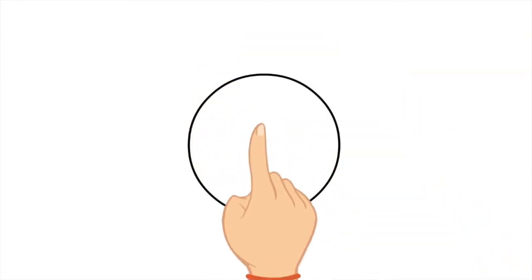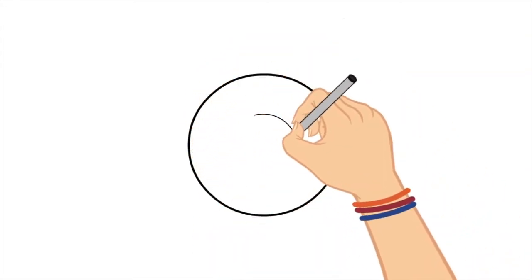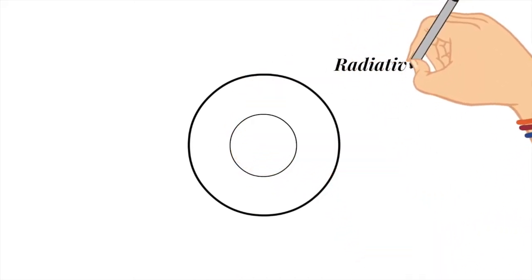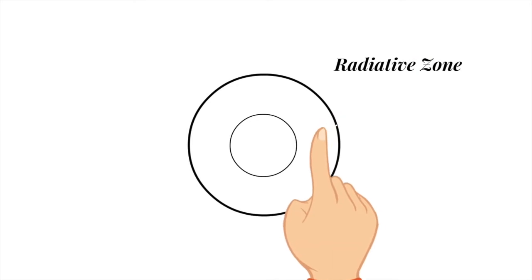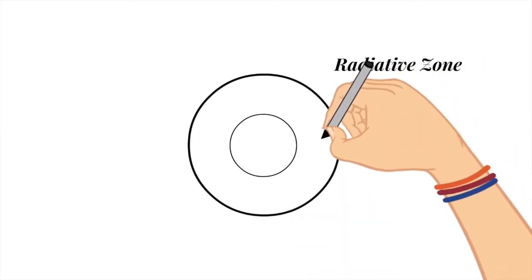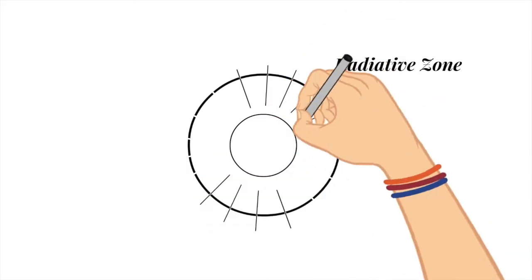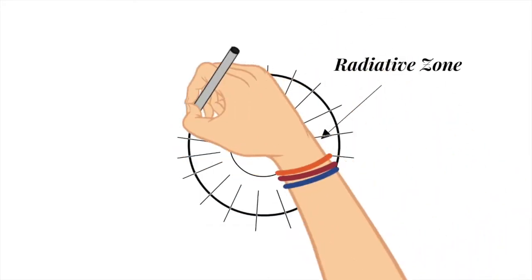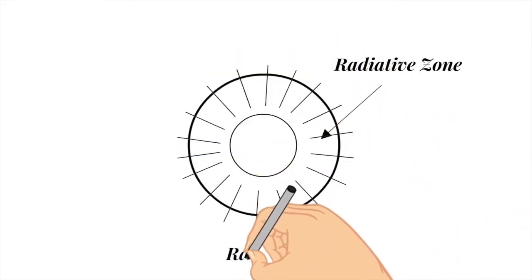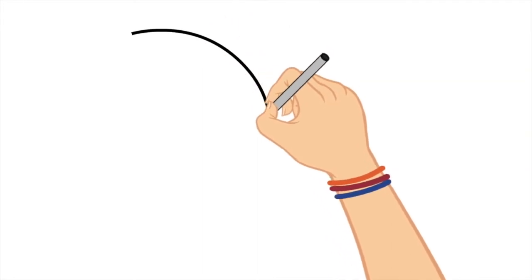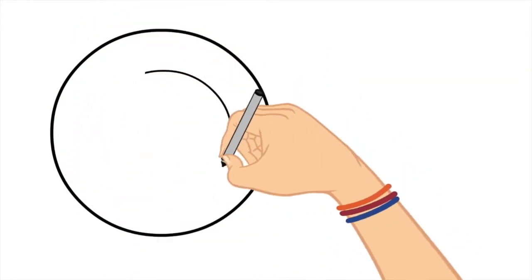Moving outward, the next part of the sun is called the radiative zone. This is easy to remember because the energy that the core produces radiates, hence the name, through this area. In other words, the energy is conveyed by photons here. In our sun, the radiative zone extends from the core outward to about 70% of the sun's radius.